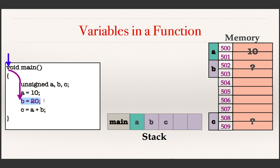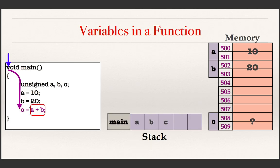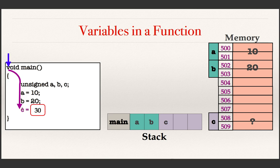The next statement is b = 20. So 20 needs to be assigned in b. The system goes to the location for b through the stack, finds that the location address is 502, and assigns 20 there. Then it comes to the last statement, where the RHS is a sub-expression needing the sum of two variables. It goes to the locations for a and b through the stack, computes the sum 30, holds it in the CPU, then finds the location for c at address 508 and assigns the result 30 there.